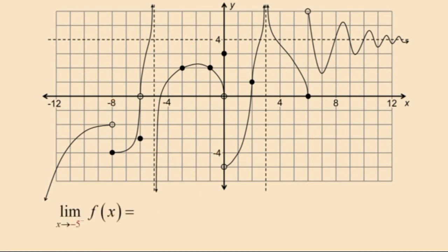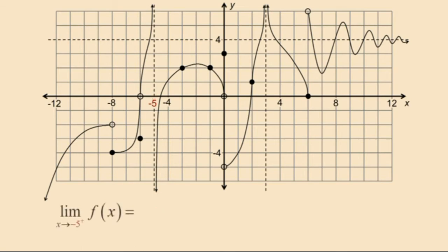Now let's take a look at the limit as x approaches negative 5 from the left of f of x. Notice that the y values or function values are increasing without bound. Therefore we say the limit is equal to positive infinity. Now let's approach negative 5 from the right hand side. Notice in this case that the y values or function values are decreasing without bound. Therefore we say our limit is equal to negative infinity.